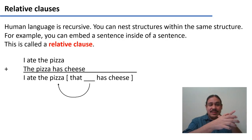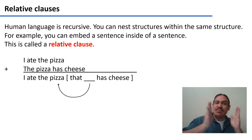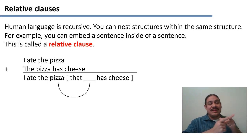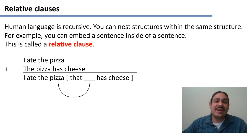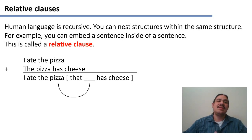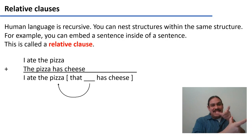Notice that these two sentences have an element in common — the pizza — which appears only once. In English you say 'I ate the pizza that has cheese'; the second pizza is deleted. In English, we cannot say 'I ate the pizza that pizza has cheese.' So 'I ate the pizza' is the main structure, 'that has cheese' is the relative clause, and this is a sentence within a sentence.